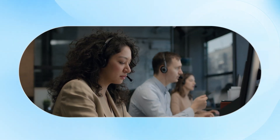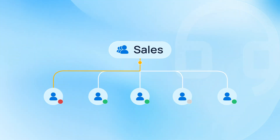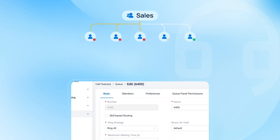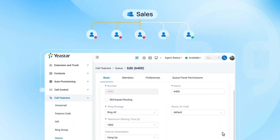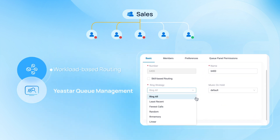Once callers are guided into your call center, they will be put in the queue. Calls are automatically distributed among your team of agents, ensuring that no call goes unanswered. Yastar's queue management goes beyond simple distribution — it offers workload-based routing to distribute calls based on agent availability and workload.